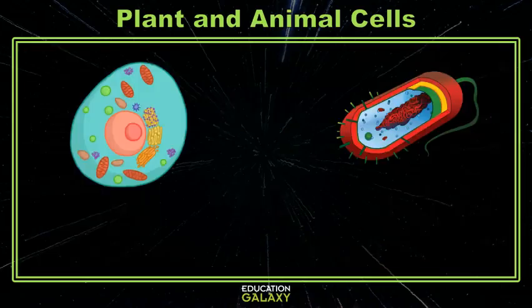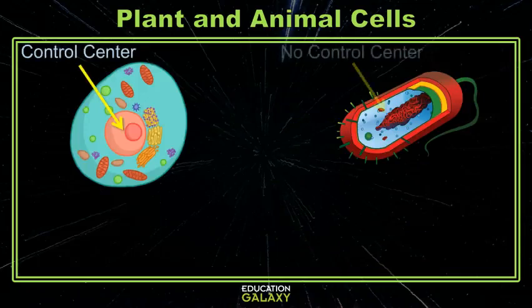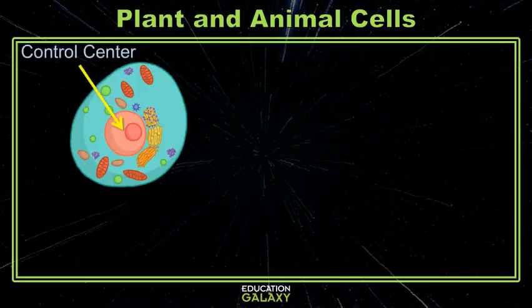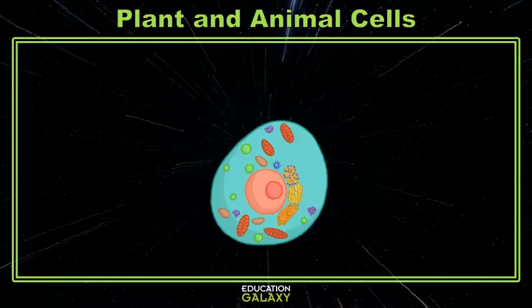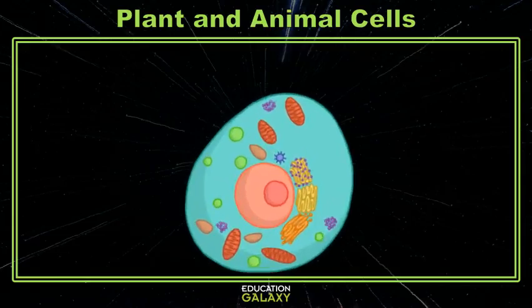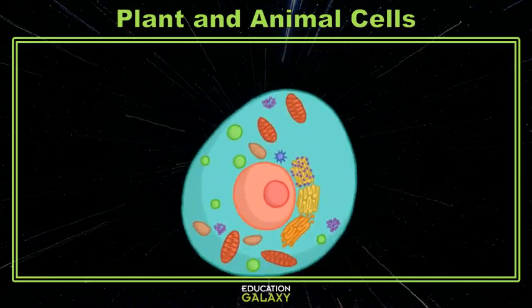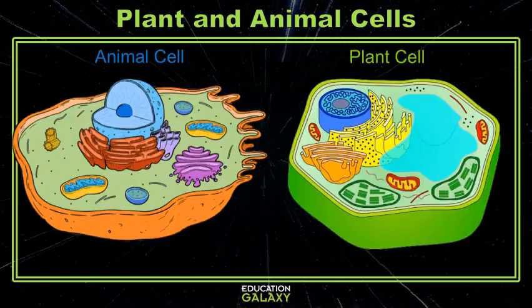But there are two main types of cells: those with a control center, and those without. Let's focus on the ones with a control center for today. These cells are called eukaryotes, and they're broken down again into two more categories: plant cells and animal cells.